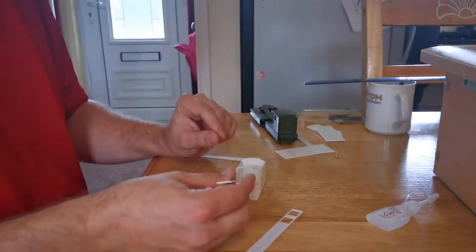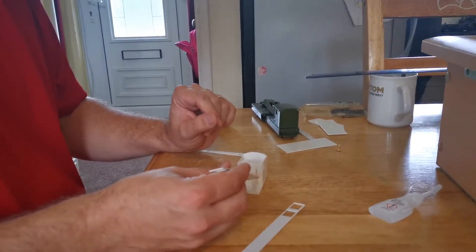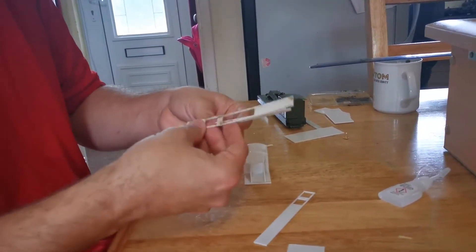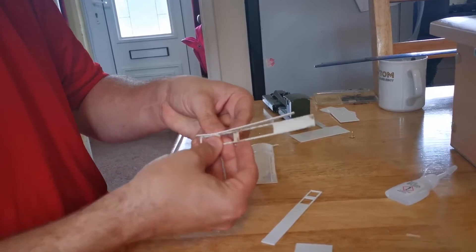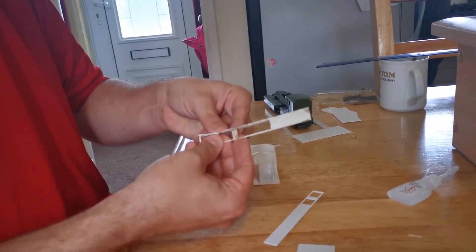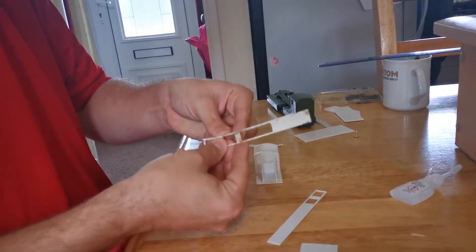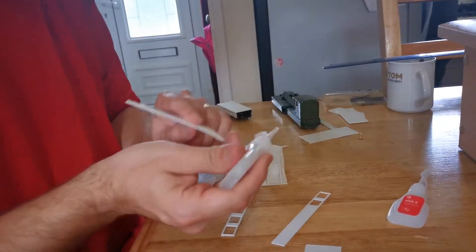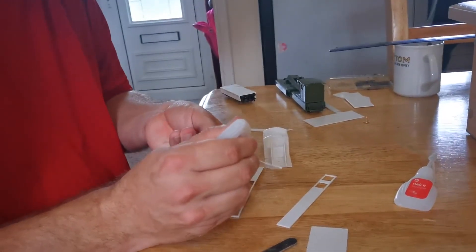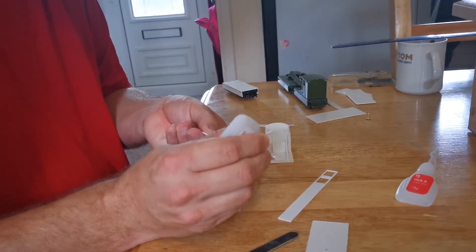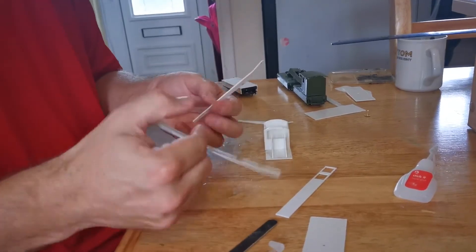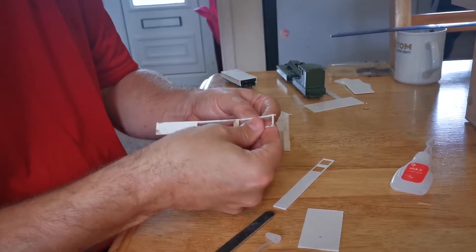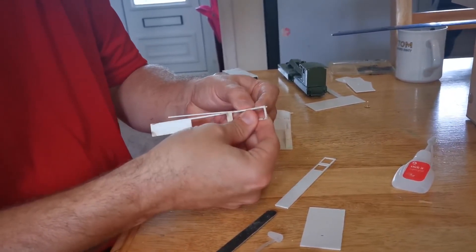The bottom will go in. As you can see, I need about 14 pairs of hands to make this work but I'll do my best for the video today. Apply some glue to the base of the jib side.